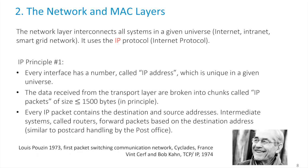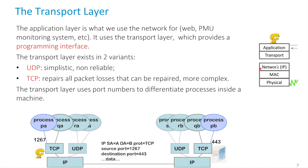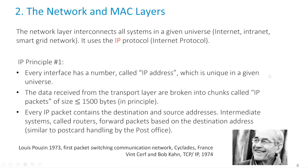Now we dive into the network and MAC layers — the interconnection network, the things that allow building a network. First, the network layer. The network layer interconnects all systems in a given universe. For most uses that universe is the Internet — a globally interconnected system where you can send a packet to a server in California, China, or almost anywhere.